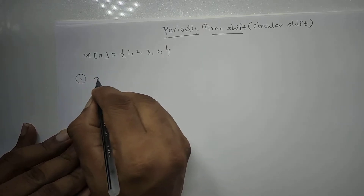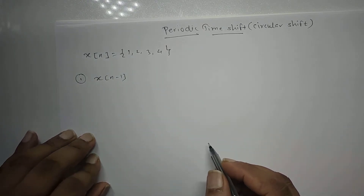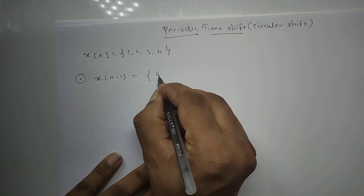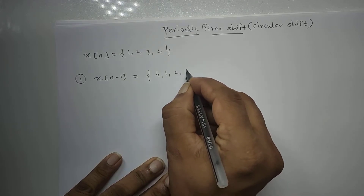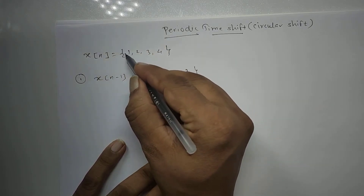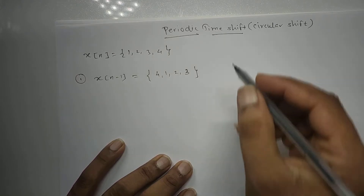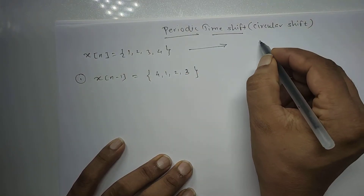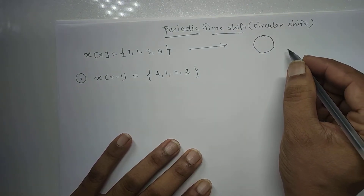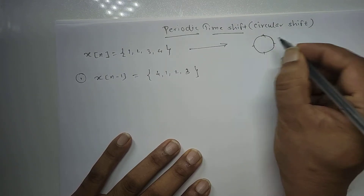x[n-1] should be {4, 1, 2, 3}. To understand this graphically, we represent x[n] on a circle divided into 4 parts, placing values 1, 2, 3, 4 clockwise on this circle. This is x[n] represented on a circle.